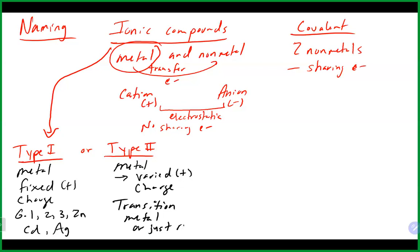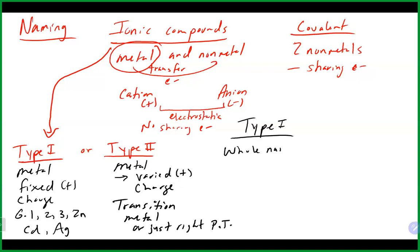Just to the right on the periodic table underneath the staircase, we have things like lead (Pb) and tin (Sn). Those are not technically transition metals but they do have a variable charge and are named as Type 2. The big difference between Type 1 and Type 2 in naming: for a Type 1 compound we basically just use the whole name of the metal.